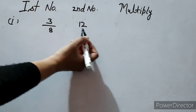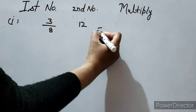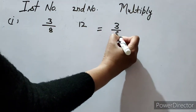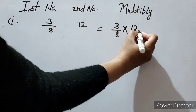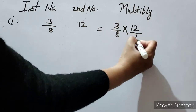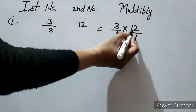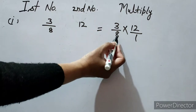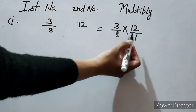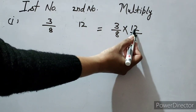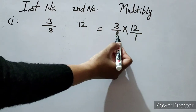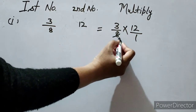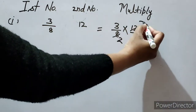Let's take one more example: 3 over 8 multiplied by 12. Here 3 over 8 is a rational number and 12 is a whole number, so we write 1 in its denominator to treat it as a rational number: 3 over 8 multiplied by 12 over 1. Since 12 and 8 are both multiples of 4, we simplify: 4 twos are 8 and 4 threes are 12.